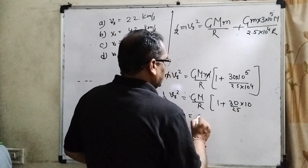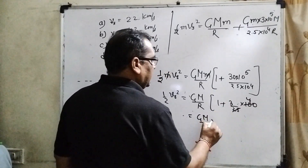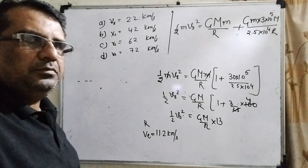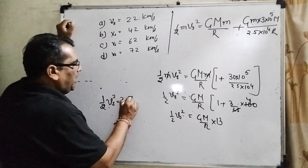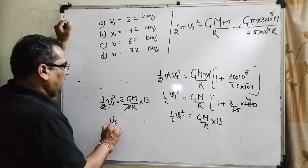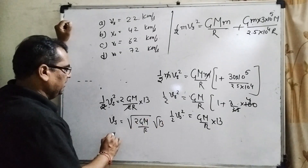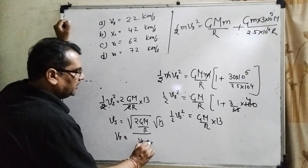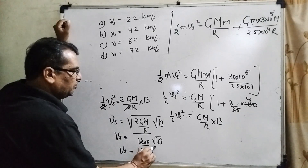Now GM/R — how much is it? Recognizing that escape velocity Ve = √(2GM/R), so GM/R = Ve²/2. So: ½ Vs² = (Ve²/2) × 30, which gives Vs² = 30 Ve², and therefore Vs = Ve × √30. This can be written separately because √(2GM/R) is the escape velocity of the Earth, and the factor is √30.